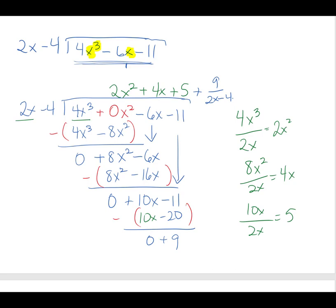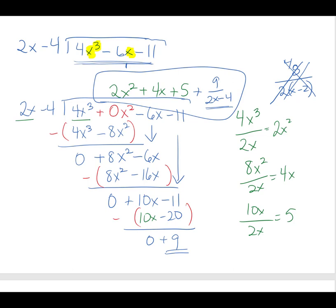I do want to mention: if my remainder were even — like 8, 6, or 16 — this denominator 2x - 4 can be written as 2(x - 2), and the fraction might be reducible. Luckily we have a 9, so we don't have to reduce it. Here is my quotient: 2x² + 4x + 5 + 9 over (2x - 4).